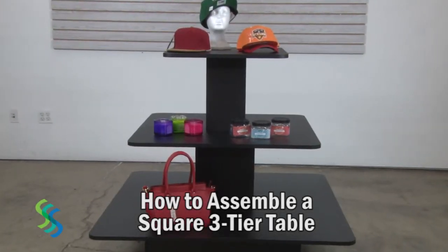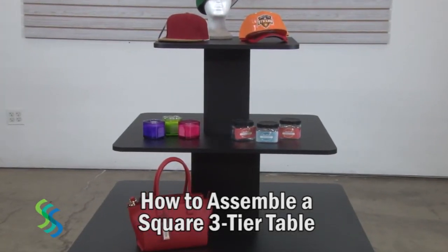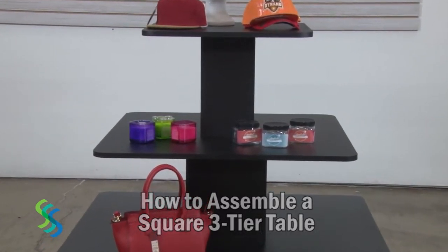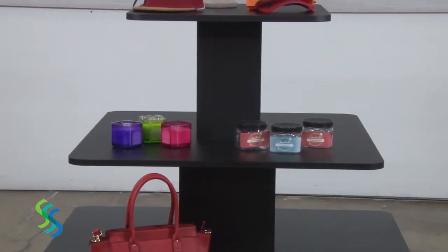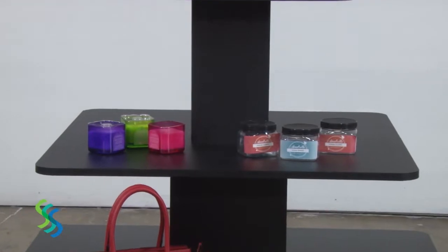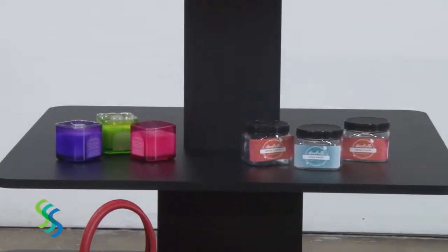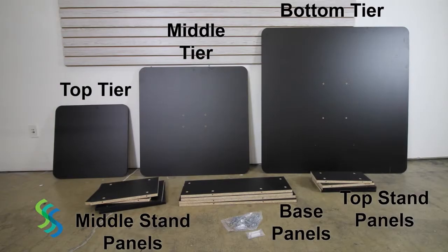Our premium square table is great for displaying men's or women's clothing and much more. The table is made of a durable laminated wood. It has one and three-eighth inch thick shelves with ten inches between each tier.